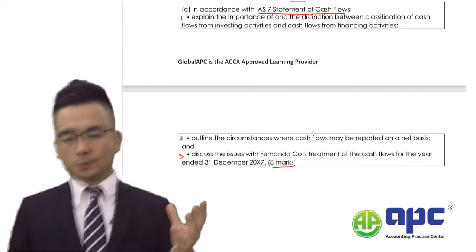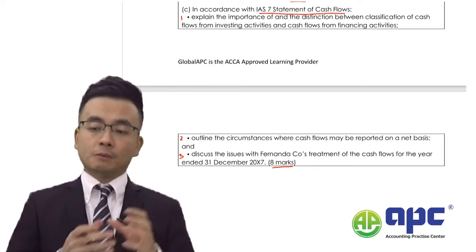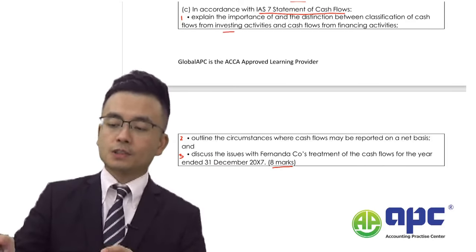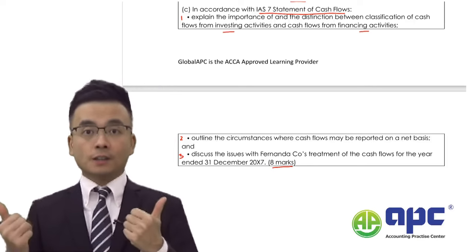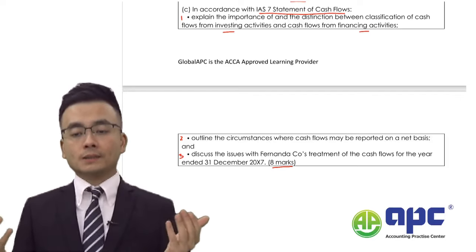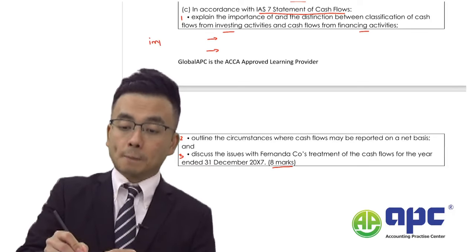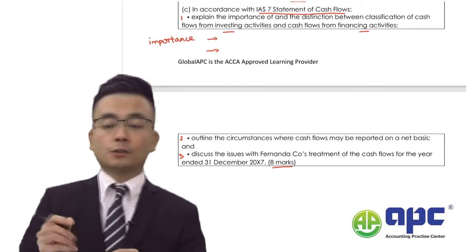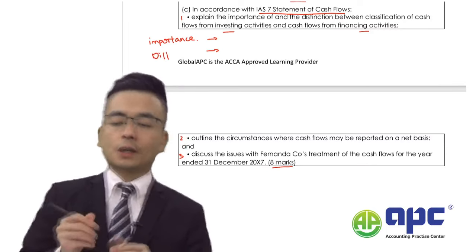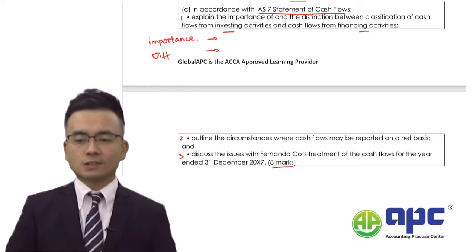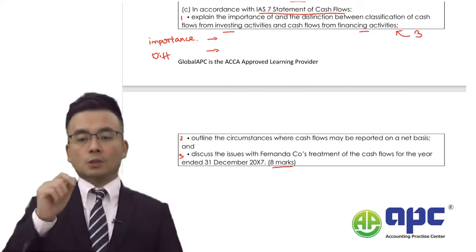Number one is to explain the importance and distinction between classification of cash flows from investing and financing activities. If I were you, I would use investing activities and financing activities as subheadings, and within each subheading, tell the examiner the importance of showing cash flows under each heading and the differences between them. I would approximately allocate three marks to part one.